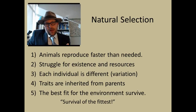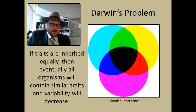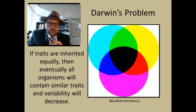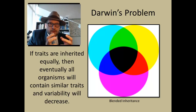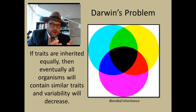Darwin, however, had a big problem with this theory. If traits are inherited equally, then eventually all organisms will contain similar traits and variability will decrease. This is referred to as blended inheritance. Blended inheritance is what happens when you mix colors together. If two individual organisms mate and the resulting offspring exhibit a blend of characters from both parents, as each generation is born, the variation of the colors will decrease until all individuals look the same — they would all be black in color. There had to be a way to introduce new variation within the population.